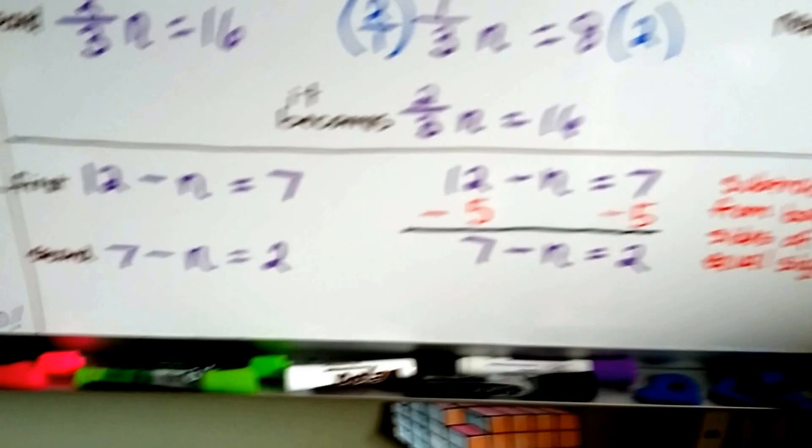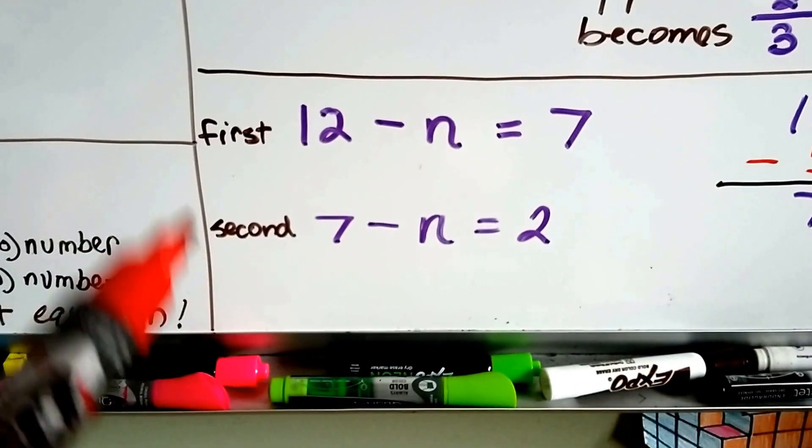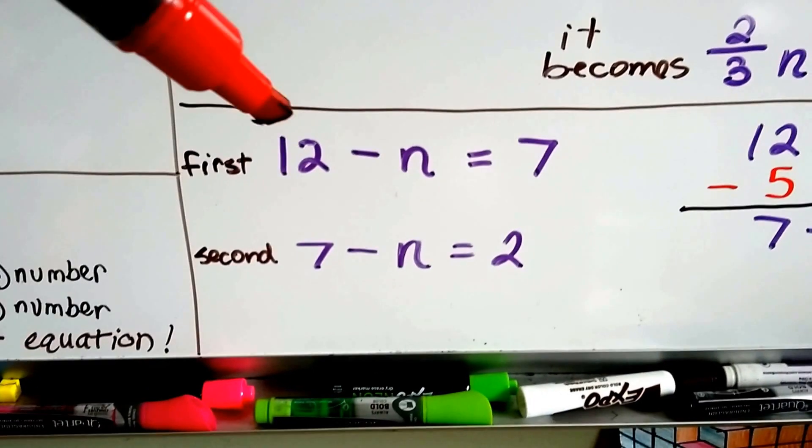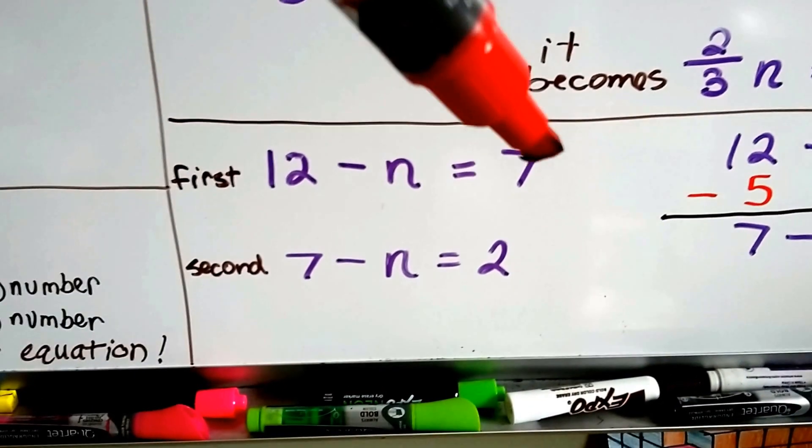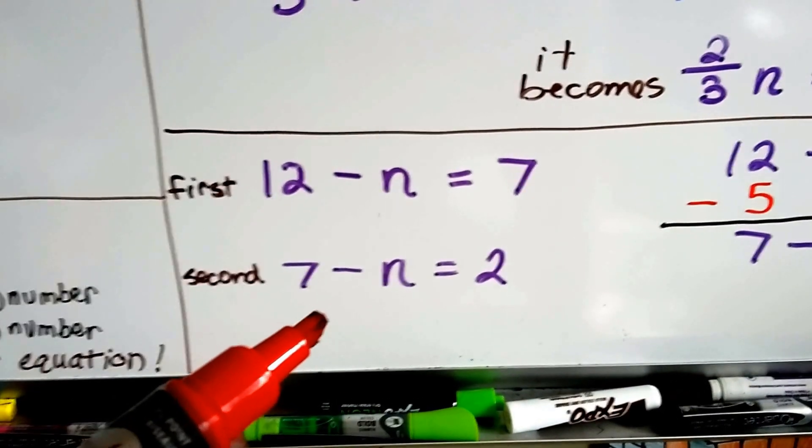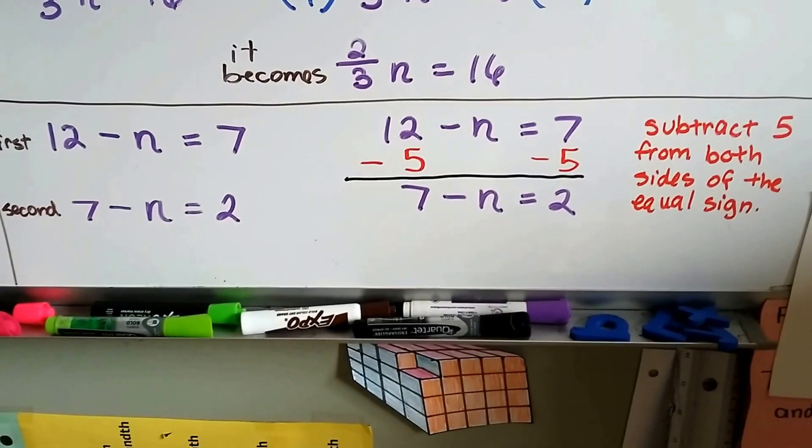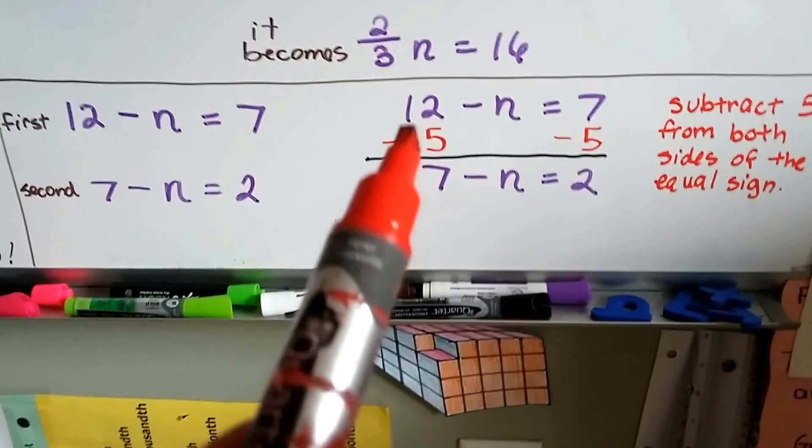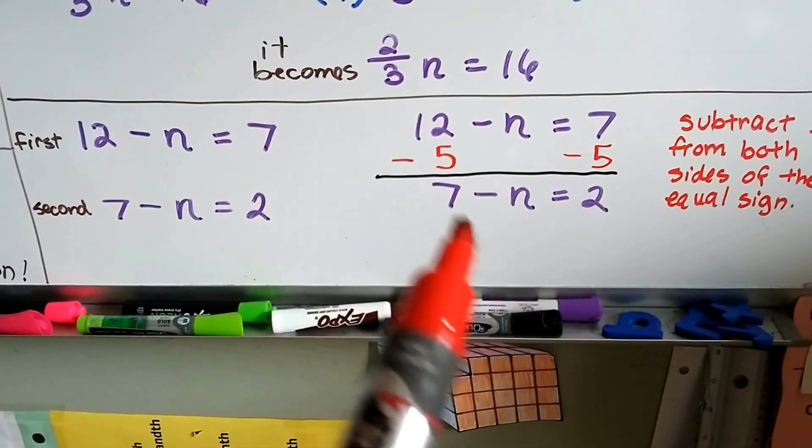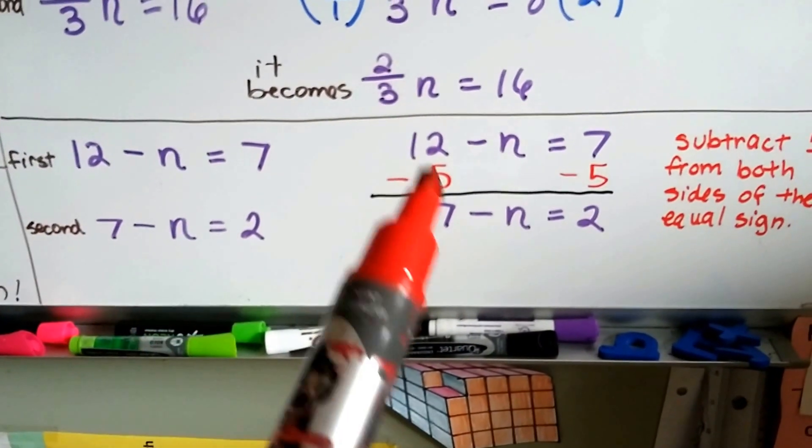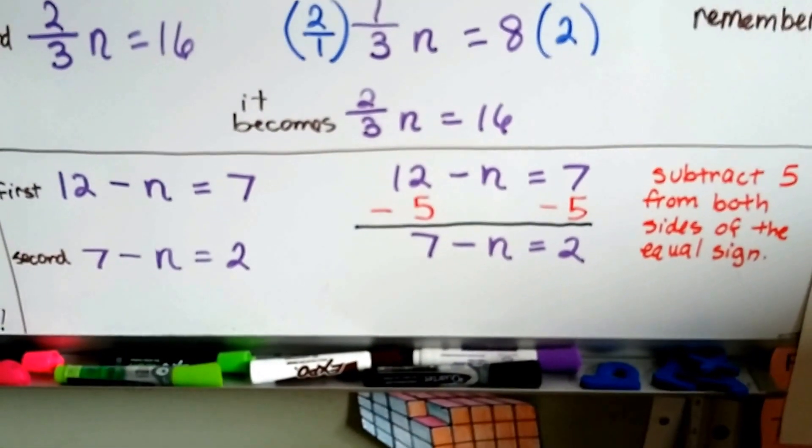Let's do it with subtraction. Here's the first equation and here's the second equation. What happened to this one, 12 minus n equals 7, that got us here? Well, if we take away 5 from both sides, if we subtract 5 from both sides, 12 take away 5 is 7 and 7 take away 5 is 2, it got us to the second equation. We took away 5 from both sides.